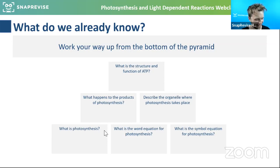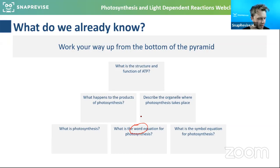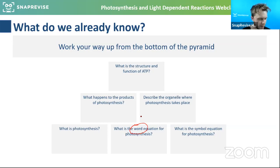The word equation for photosynthesis: watch out — if it asks for a word equation, it is not asking for symbols like H₂O or CO₂ or C₆H₁₂O₆. It is asking for the words. So it's water plus carbon dioxide makes glucose and oxygen. That is the word equation.